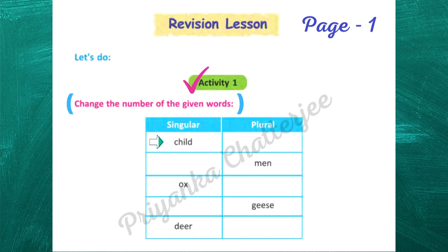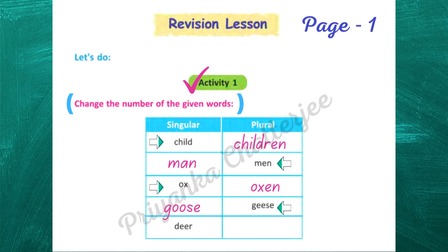The plural of child is children. The singular of men is man. The plural of ox is oxen. The correct answer is oxen. The singular form of geese is goose. And the plural form of deer is deer — deer is plural.